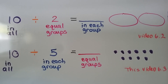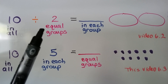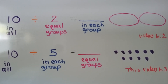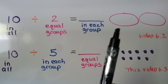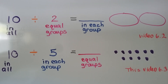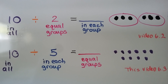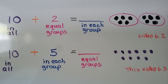We learned in video 6.2 that if we know how many there are in all, and we know that total is split into a certain number of groups — say two — we need to have ten in those two groups, so we can find how many are in each group. We do this by putting a counter in the first group, then the second group, taking turns going back and forth until we've used all ten counters. We can see we put five in each group.